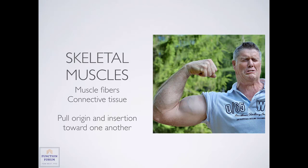In isolation, if you contract the biceps by itself, it will move the forearm, the elbow, and the shoulder. So if we want to do a true bicep curl and move just the elbow, we need to utilize other muscles to produce that motion.